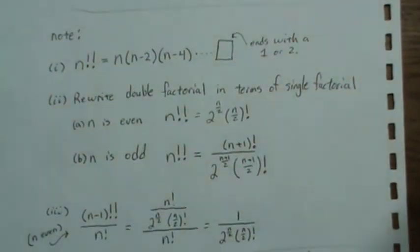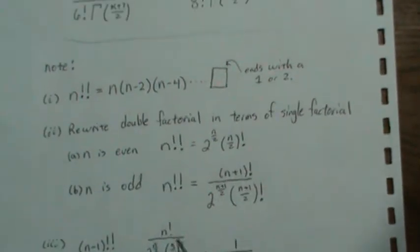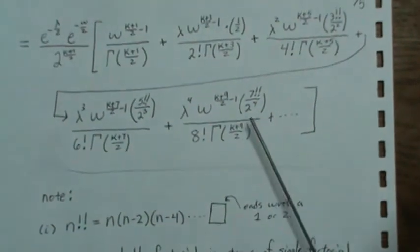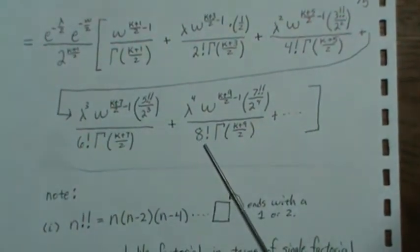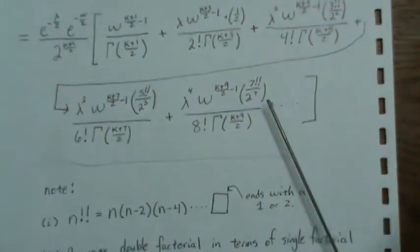We have something like this. We have n minus 1 double factorial over n factorial. And I'm going to pull this up here. So we have say 8 factorial and then in the numerator we have 7 double factorial.